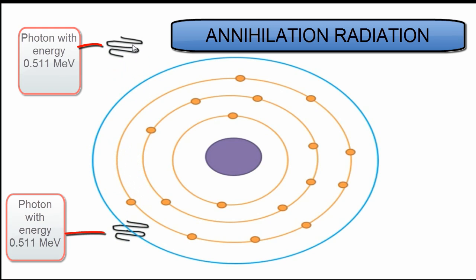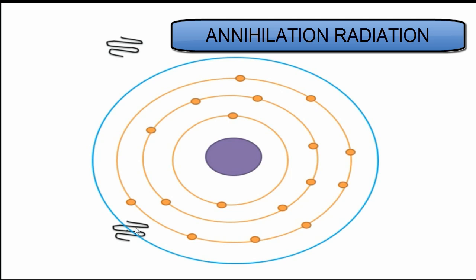Each photon has energy of 0.511 MeV. In this process, the positron and electron mass is disappeared, resulting in emission of energy. Energy is conserved, as you see here. The mass is converted into energy.